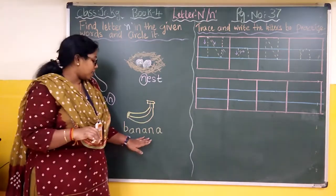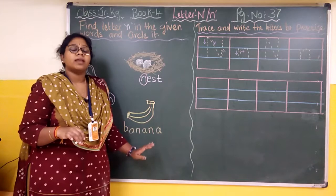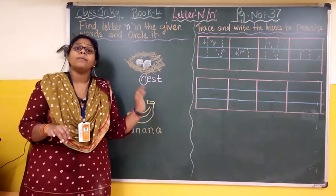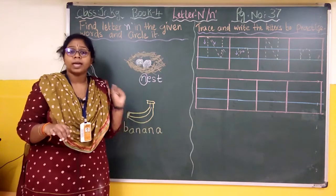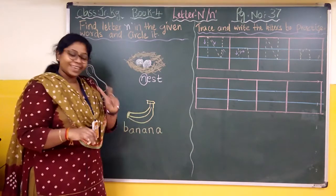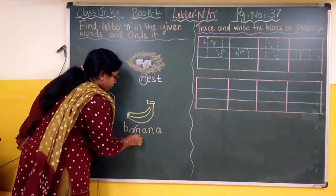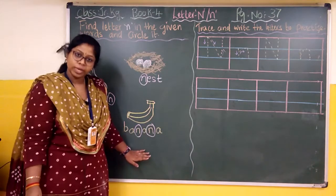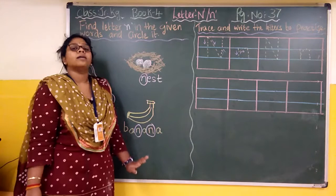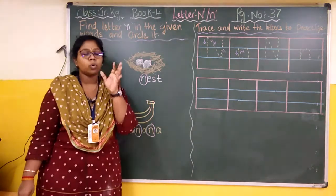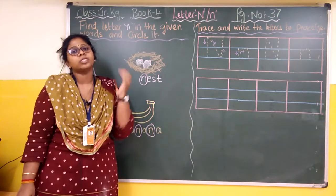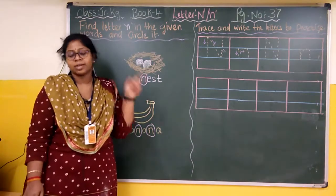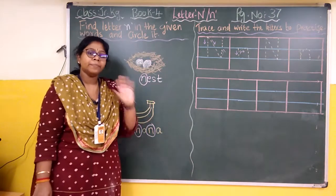Now banana — B-A-N-A-N-A. Banana. So how many times does N appear? Yes, two times. So we have to circle both the N's. In your book, more words are there — find the letter N and circle it. Make a circle around it.